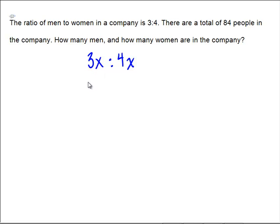If 3x is the number of men and 4x is the number of women, then the total number of people must be 3x plus 4x.